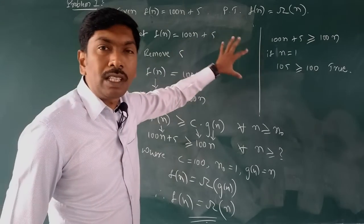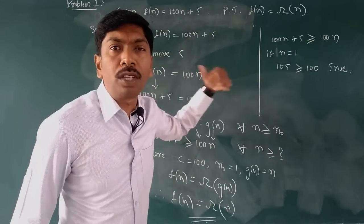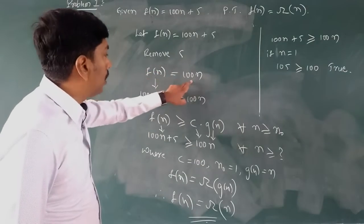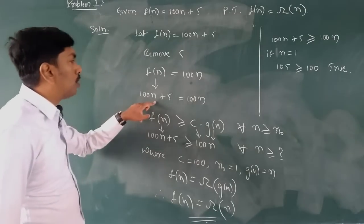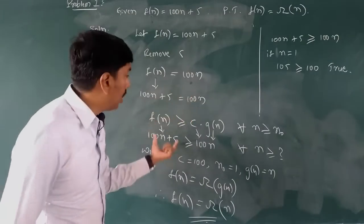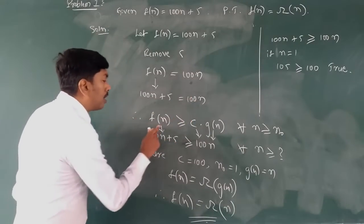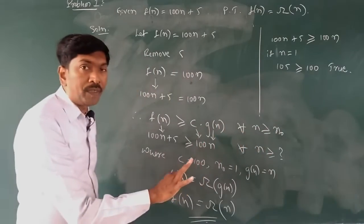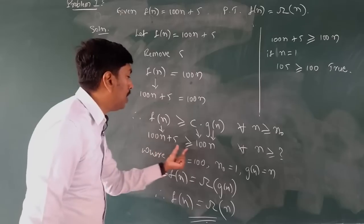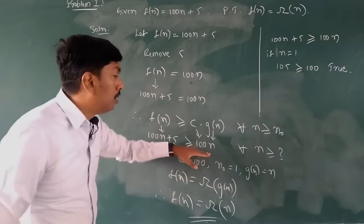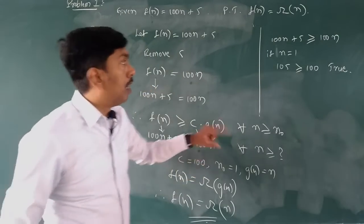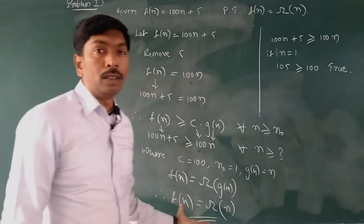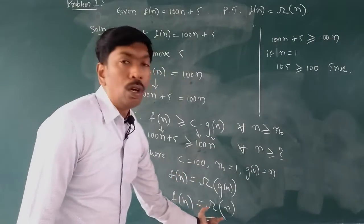100n + 5 — whether it is 5, 6, 10, or 15, you just remove that element. After removing, f(n) = 100n. So 100n + 5 equals 100n. The equation is f(n) ≥ c · g(n) for all n ≥ n₀. So 100n + 5 ≥ 100n is true. If n = 1, it is automatically true. So finally, f(n) = Ω(n).